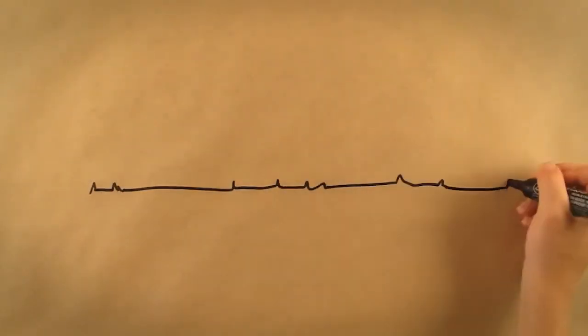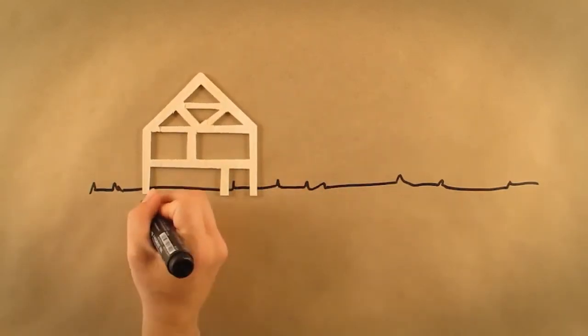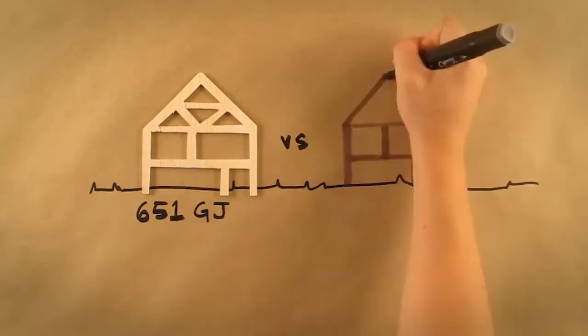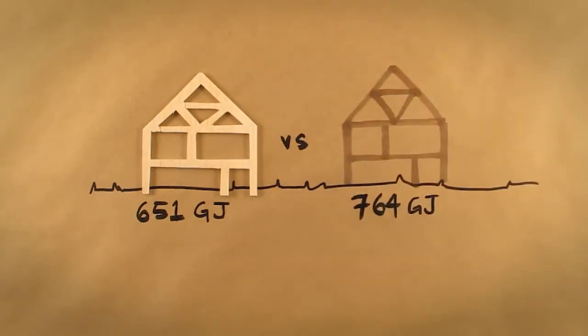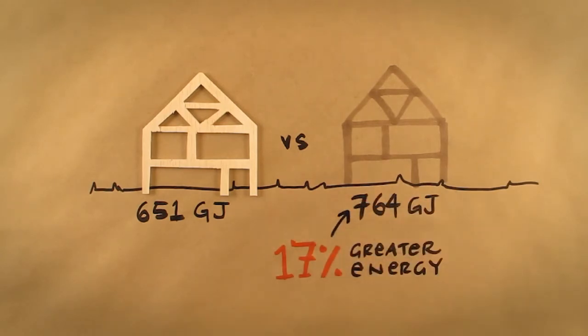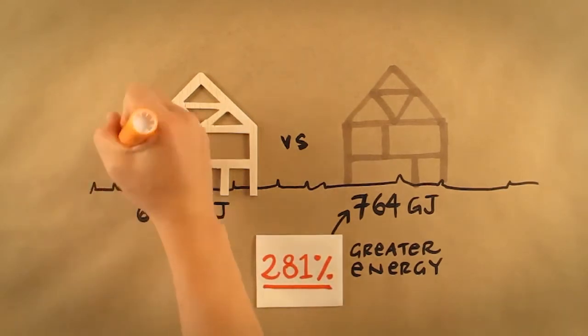A study looking at embodied energy figures for an average size home of 200 square meters in a warm temperate climate showed a wooden framed house used 651 gigajoules of energy to complete, compared to a steel framed house using 764 gigajoules. That is 17% greater energy. If you then take into account the energy benefits from using biofuel in wood processing, the steel framed house needed 281% more energy than the wooden framed house.